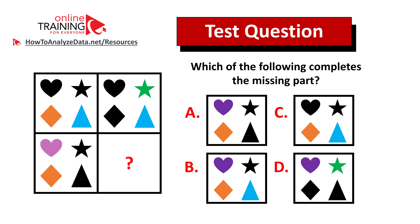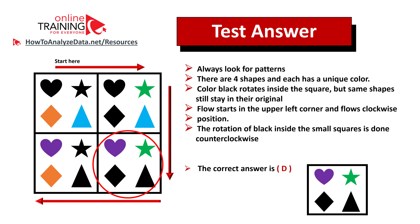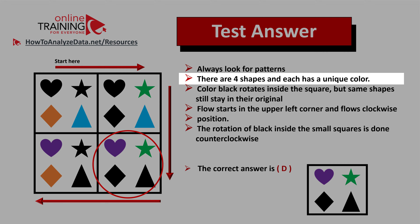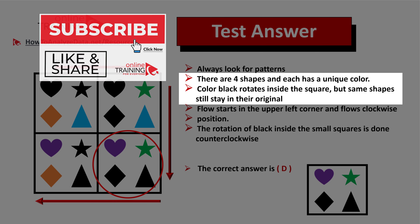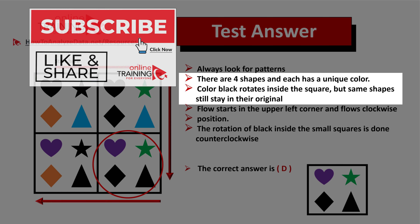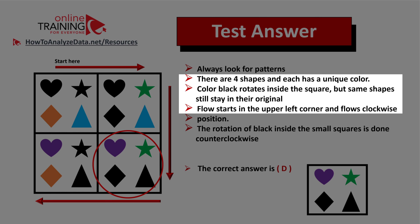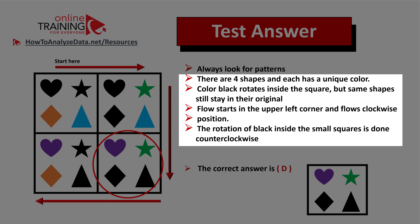Did you come up with the answer? Let's continue to see how we can solve this challenge together. There are four shapes inside the square and each shape has a unique color. The shapes stay in place — the only thing that changes is which shape is colored black. The pattern of the black color inside the squares rotates counterclockwise. The flow among the shapes starts in the upper left corner and goes clockwise, but the rotation of the black color goes counterclockwise — that's the tricky part.